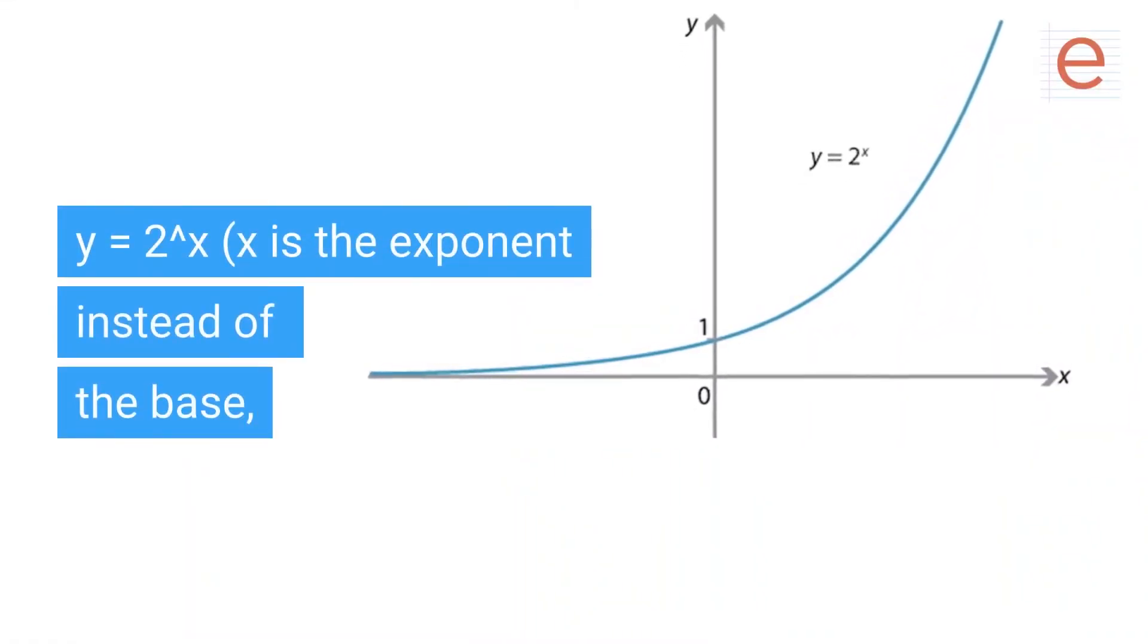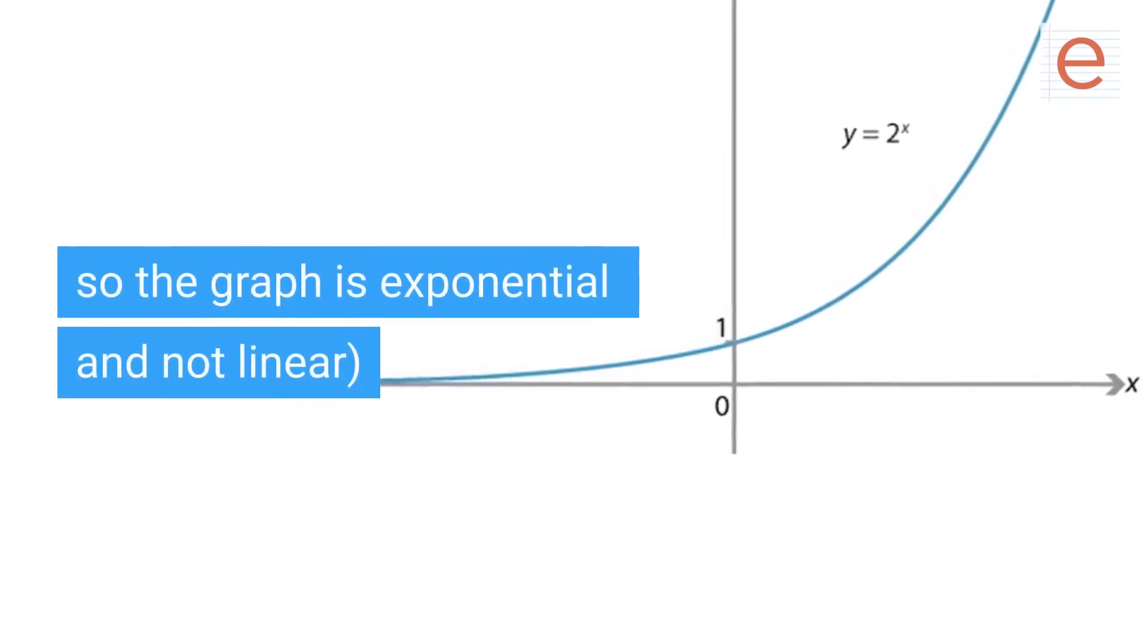y equals 2ˣ: x is the exponent instead of the base, so the graph is exponential and not linear.